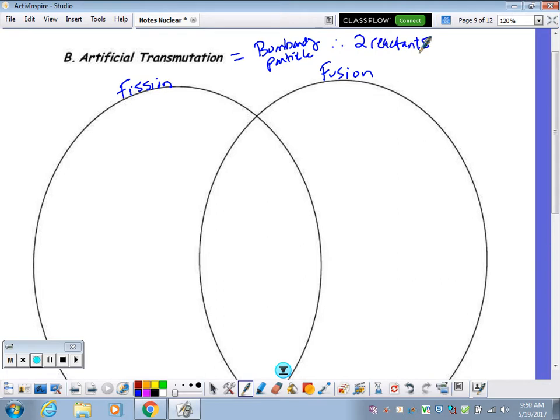As I mentioned before, the two major types of artificial you need to be most familiar with, fission and fusion. Notice we have a Venn diagram, so that means there are unique characteristics to each, versus they have some things in common.